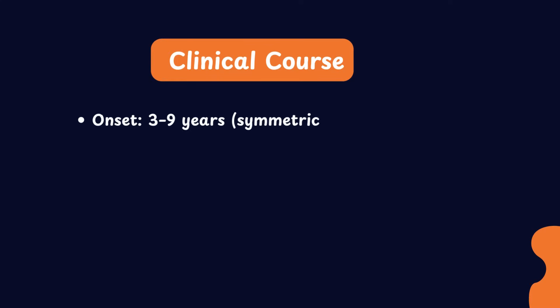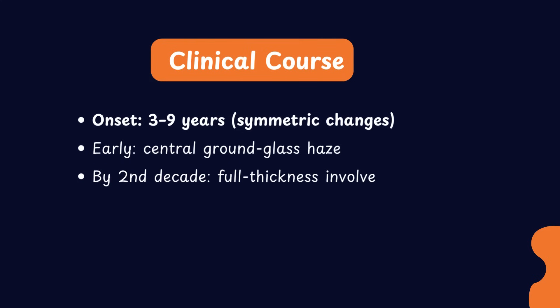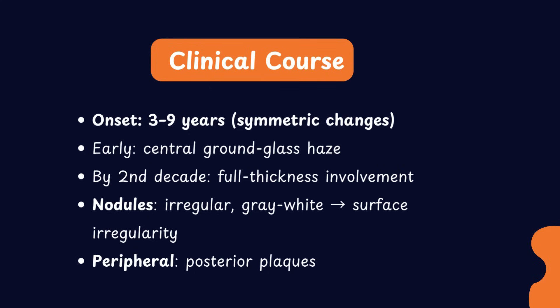The clinical course of macular corneal dystrophy usually begins early, between 3 and 9 years of age, with symmetrical changes in both eyes. The first sign is a faint ground glass haze in the central stroma. As the condition progresses, the haze spreads towards the periphery and eventually involves the entire corneal thickness by the second decade of life. Importantly, macular corneal dystrophy can extend up to the limbus without any clear zone. Multiple irregular gray-white nodules appear and, because they protrude slightly, they cause surface irregularity.